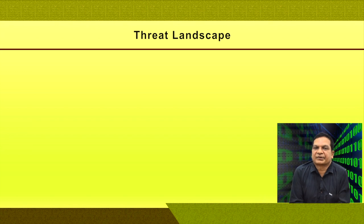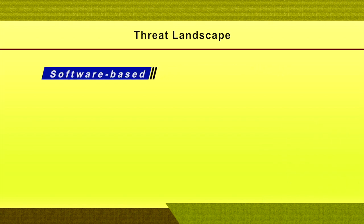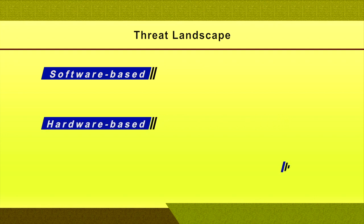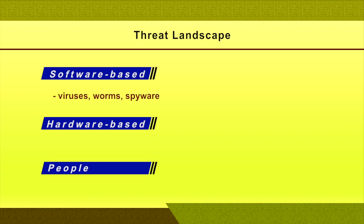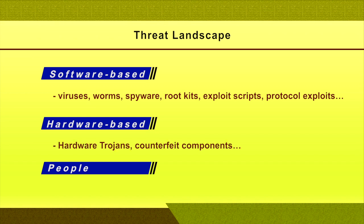The threat landscape, in a nutshell, consists of three categories: software-based, hardware-based, and people. Software-based threats include viruses, worms, spyware, rootkits, exploit scripts, protocol exploitation, and so on. Hardware-based threats include hardware trojans and fake components. The third category is people — threats through insider or outsider activity. Attacks can come from any one of these three, or a combination of hardware and software-based threats.